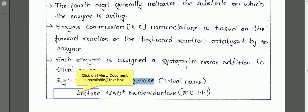By this enzyme commission naming system, we can identify information about a particular enzyme — to which class it belongs, to which subclass it belongs, and on which substrate it acts. Everything can be easily identified just by seeing the name itself.